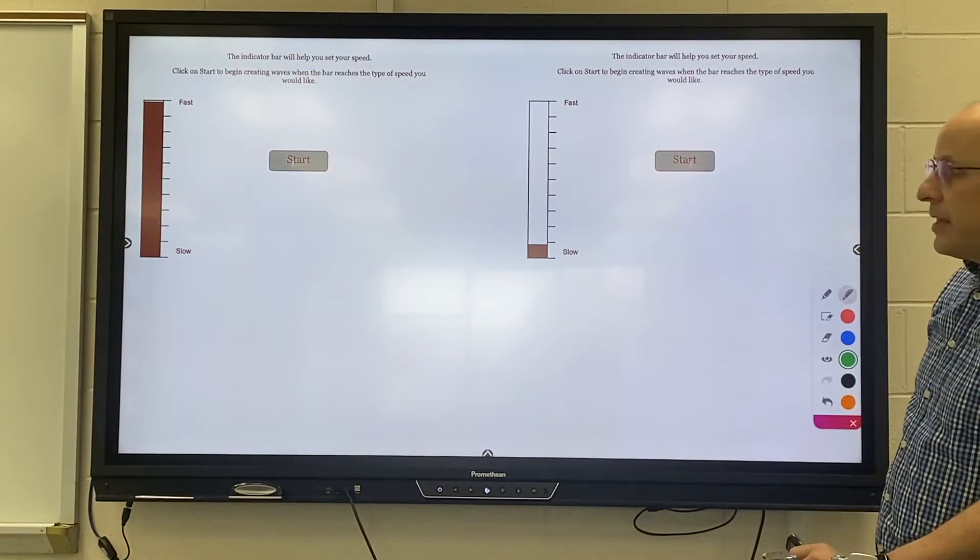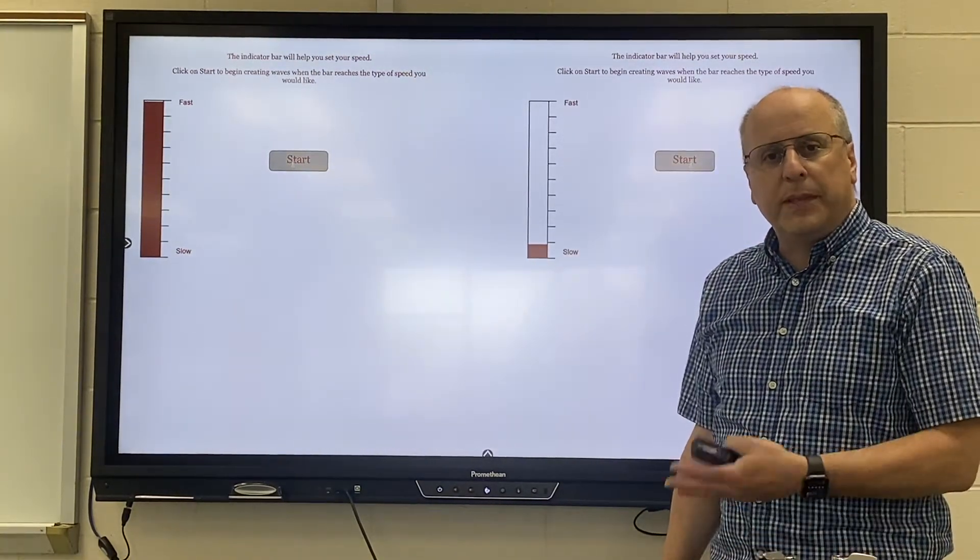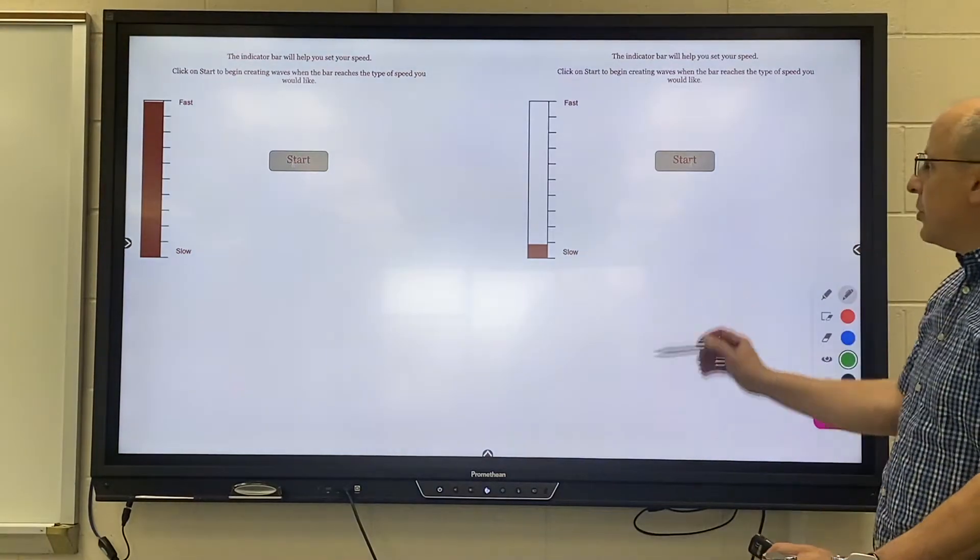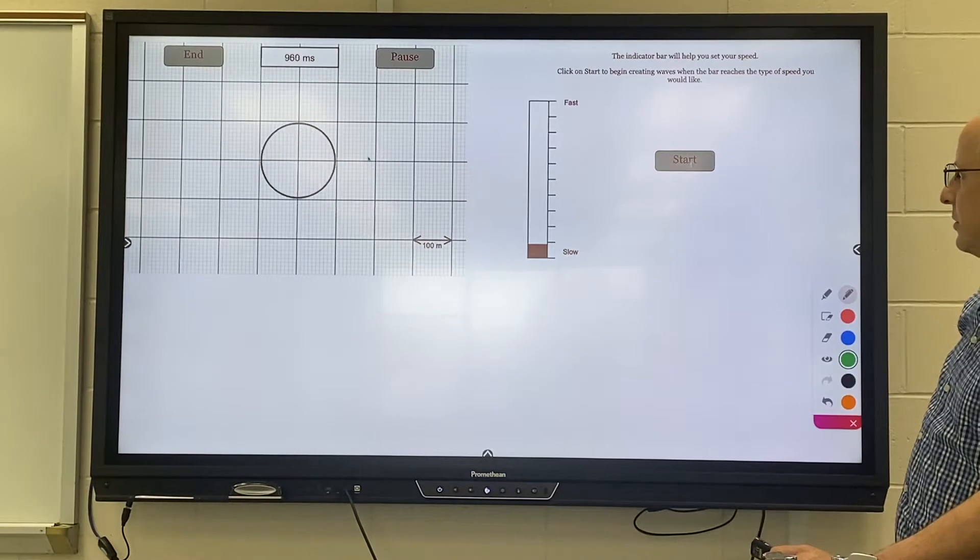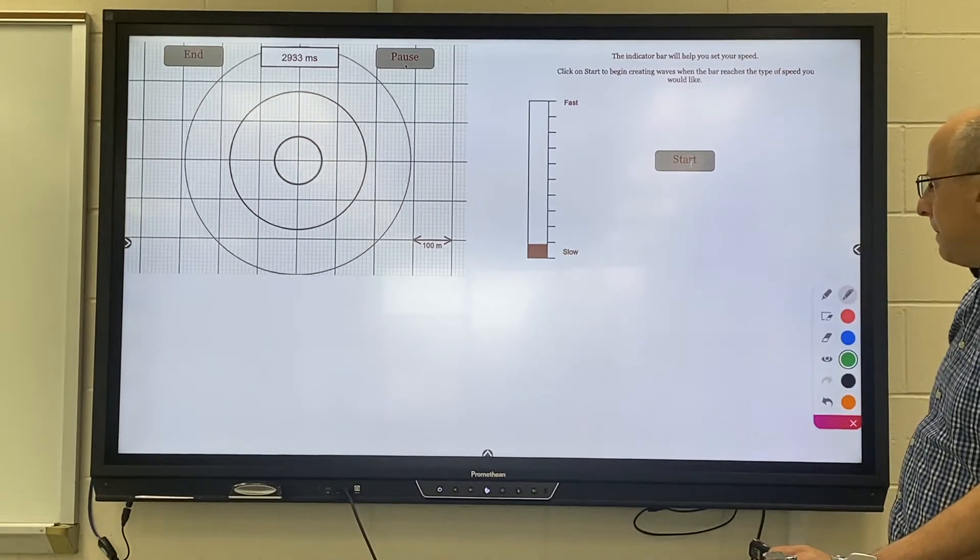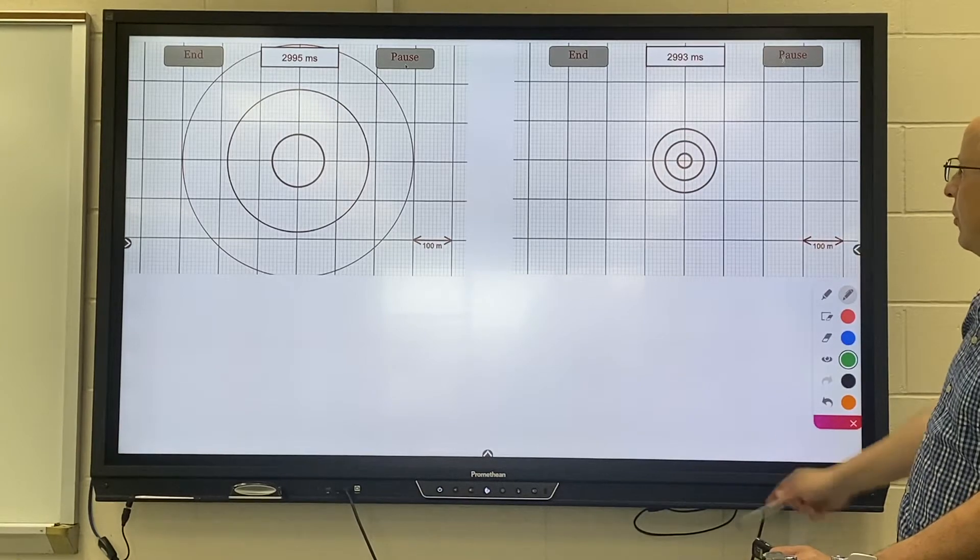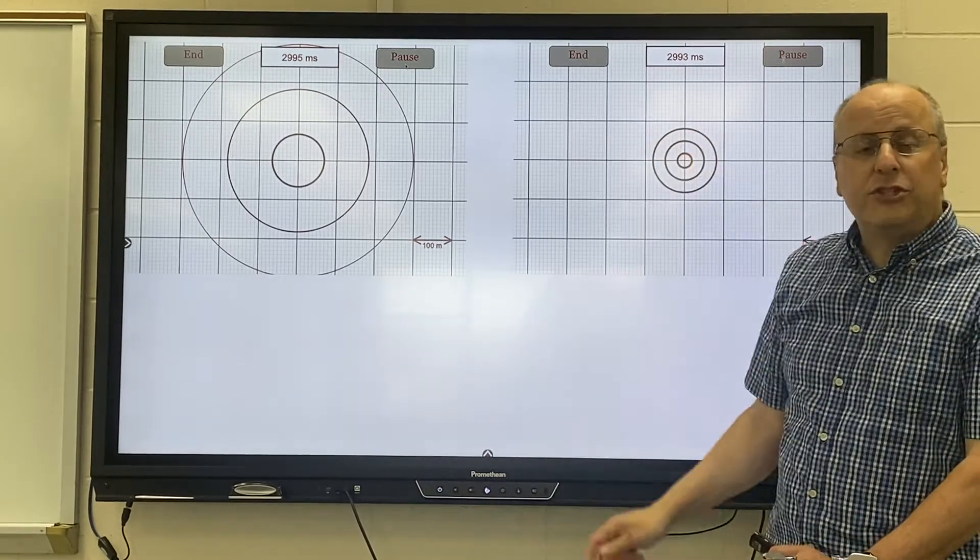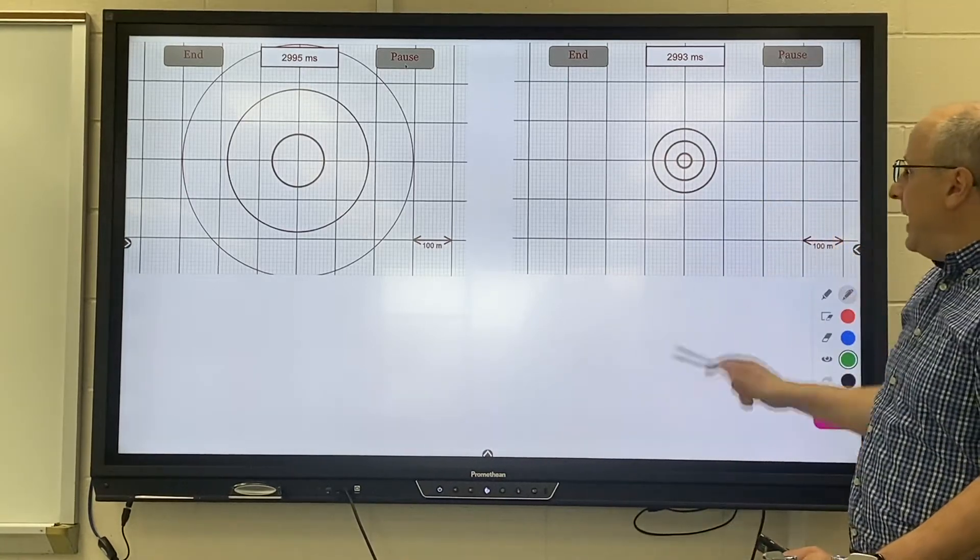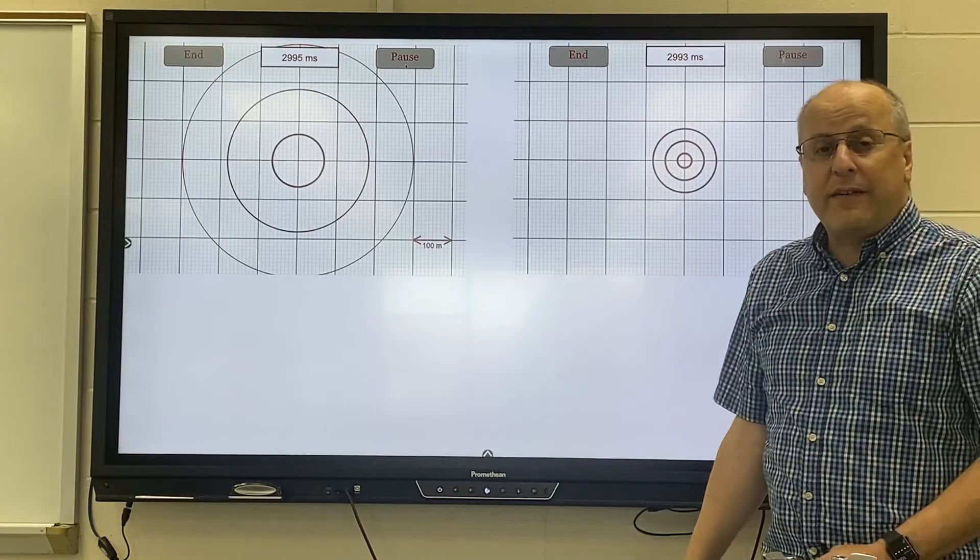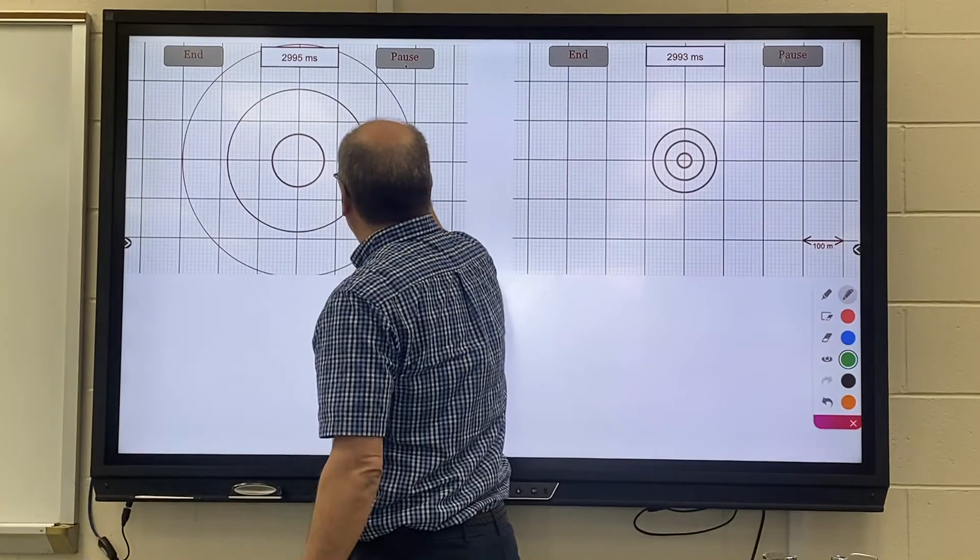And it turns out that that constant is dependent upon how quickly the wave moves through the material in question. So we're going to do a high speed and then we're going to do a slow speed. So there's the high speed and here's the low speed. You'll notice I let them run for each about 2.99 seconds. You'll notice that they each made three waves so they have the exact same frequency, but you'll notice here the wavelength is much bigger than it is here.